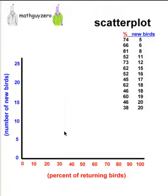Now we plot each individual point. So at 74%, we're going to plot 5 birds. Let's do that now. So at 75%, we go up to 5 birds, right about there.